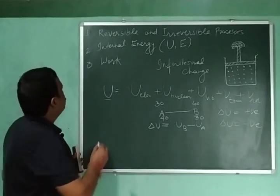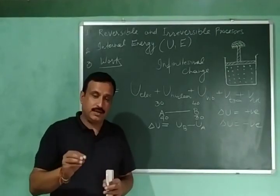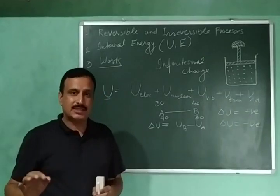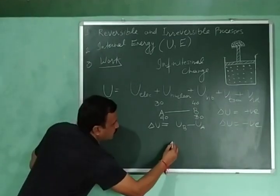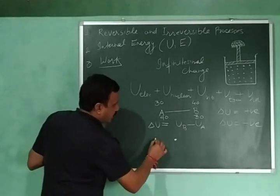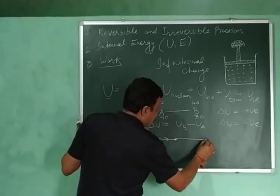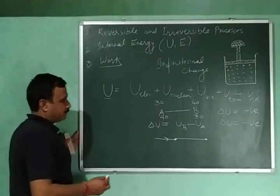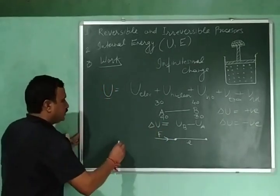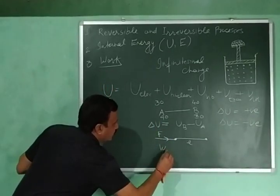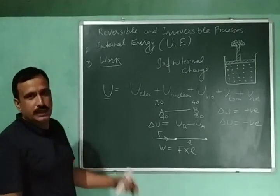Our next topic is work. We have studied in physics that work is said to be done when the point of application of a force is displaced in the direction of the force. If I apply force F on a point and it displaces by L in the direction of the force, then work equals force times displacement. This type of work is called mechanical work.